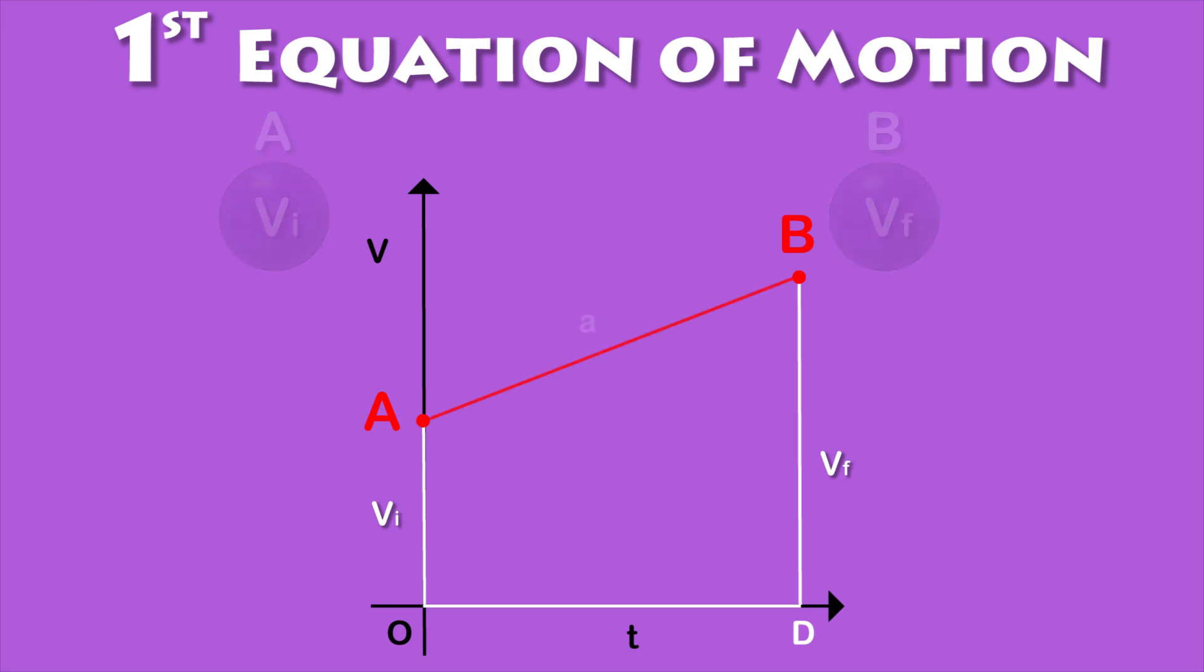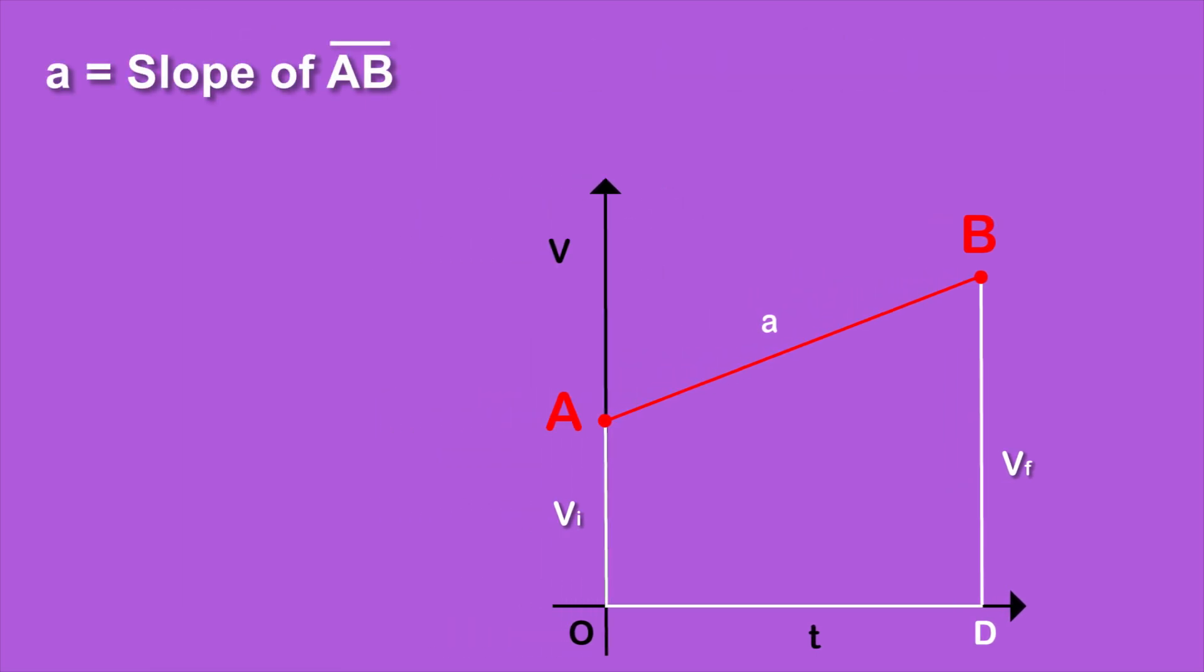Now the slope of line AB is acceleration. As the line AB is on a velocity-time graph, and acceleration is the change in velocity with respect to time, acceleration equals the slope of line AB, which is BC by AC.